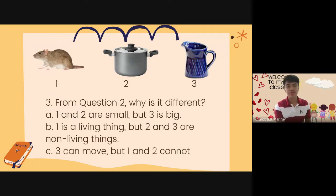Number three. From question two. Why is it different? A. One and two are small. But three is big. B. One is a living thing. But two and three are non-living things. C. Three can move. But one and two cannot.